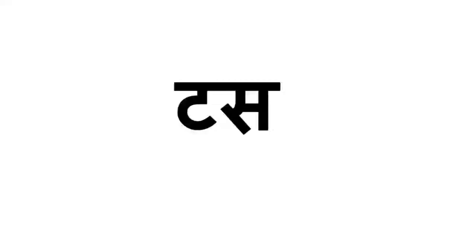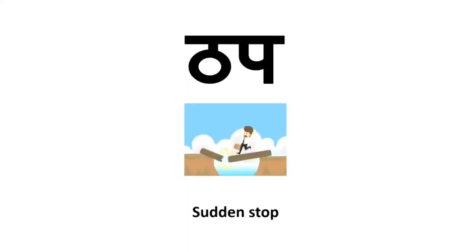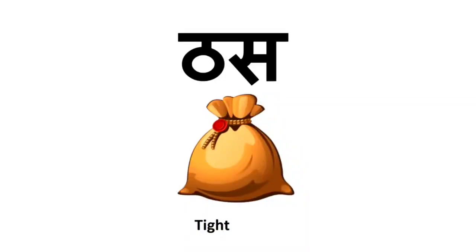T-S means to move — it doesn't have any picture. T-P, T-P — I hope you all are reading after me. You can see the picture: T-P means sudden stop, for something which was not planned. The next word is T-S-A. Look at the picture — you can see an overloaded sack which is full of something, that's why it's too tight. T-S means tight.